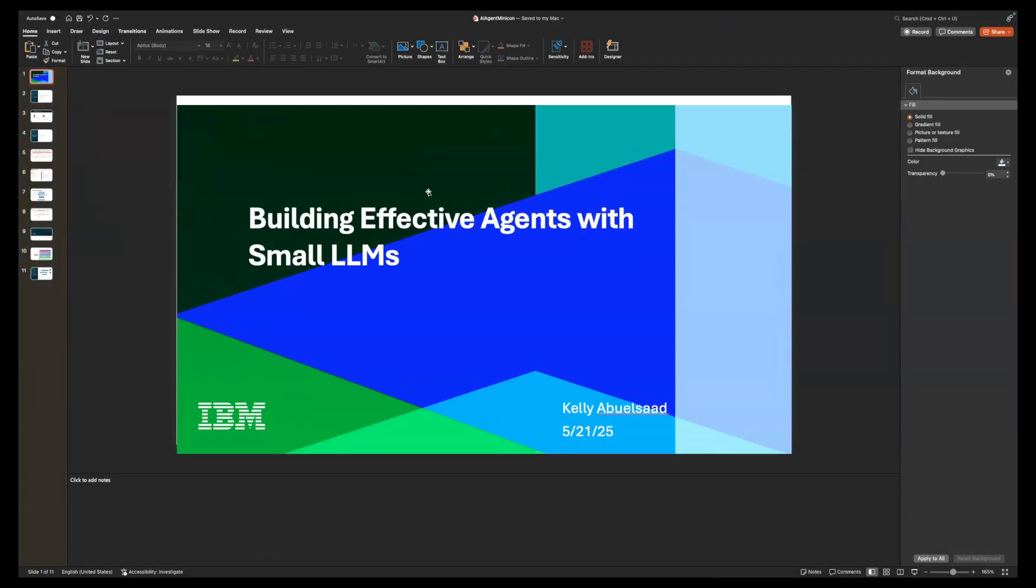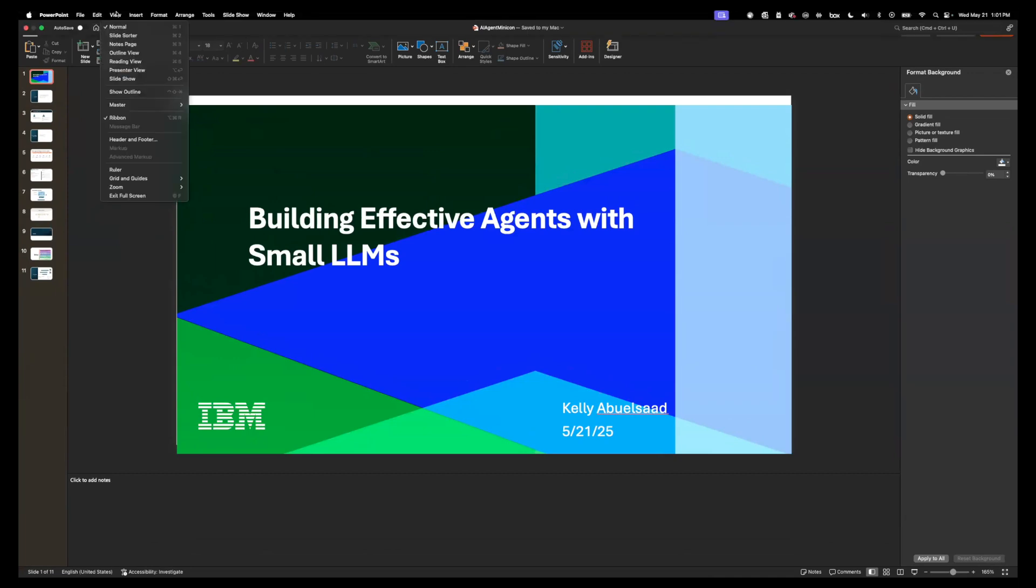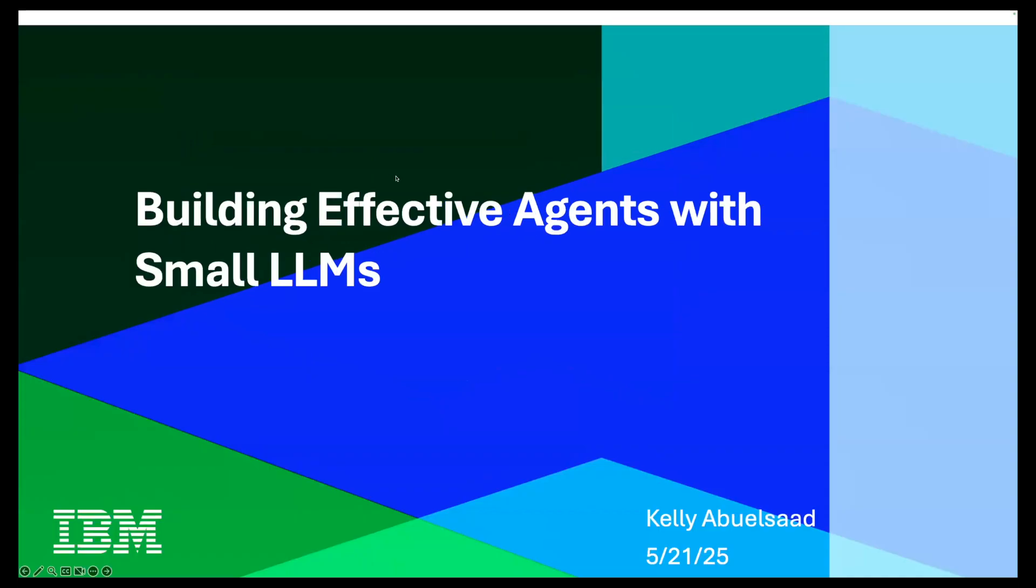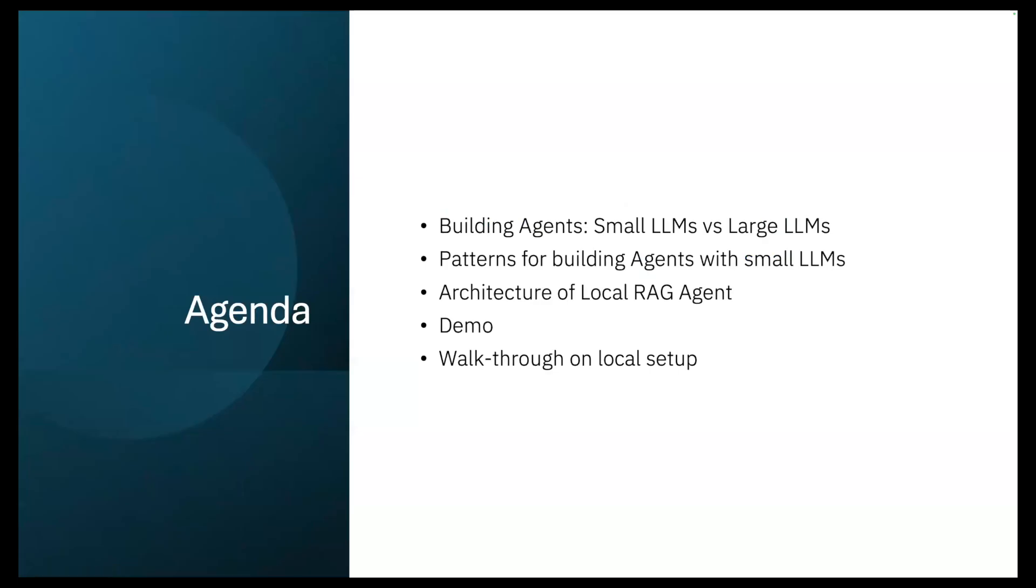Hey, everybody. I'm going to be talking today about building effective agents with small LLMs. Okay. So the agenda for today, we're going to be talking about when you're building agents, what's the difference between building something with a very large LLM versus a small LLM? And then when you do build something with a small LLM, patterns for doing that. And then we're going to do a live demo of a locally running RAG agent that I built as a demonstration of types of patterns you can use for small LLMs.